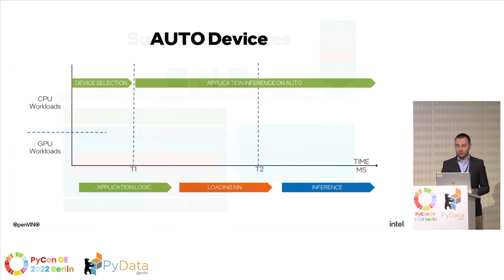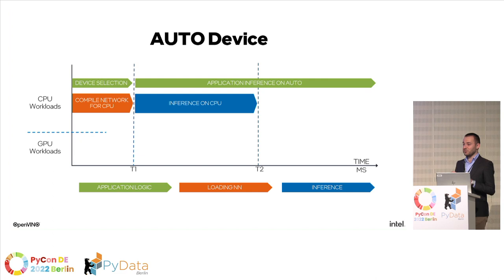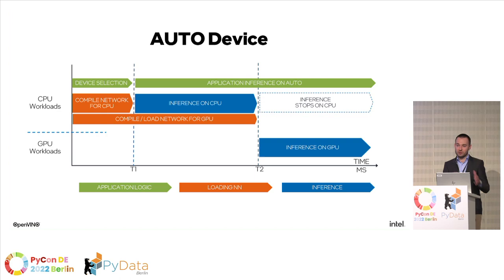AUTO has a particularly nice feature. If the best device is GPU, startup time is longer because OpenCL kernels need to compile. So AUTO first compiles and runs inference on CPU immediately, then compiles and loads the network on GPU in the background. When GPU is ready, it switches inference from CPU to GPU and releases CPU resources. Your inference starts immediately and automatically moves to the best-performing device once it's ready.